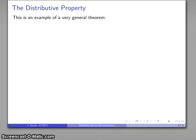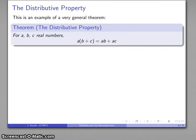Now this is actually an example of a very useful theorem in mathematics that's known as the distributive property, which tells us that if I have three numbers a, b, and c, then the product a times the sum of b plus c is the sum of the product a times b plus the product a times c.